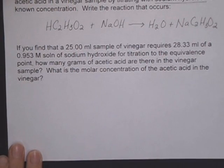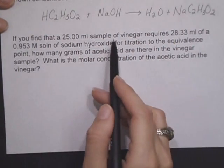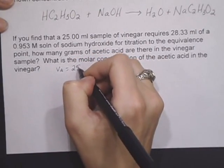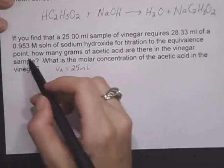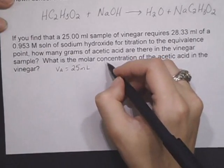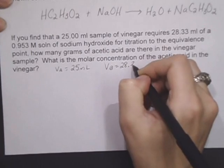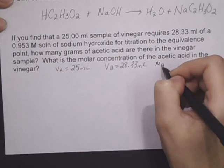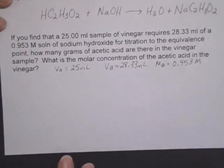Now that you have the equation, let's take a gander at the information at the bottom. We have a 25 milliliter sample of vinegar. So I'm going to call that the volume of the acid. Requires 28.33 mls of 0.953 molar sodium hydroxide. So that gives me the volume of the base and the concentration of the base.